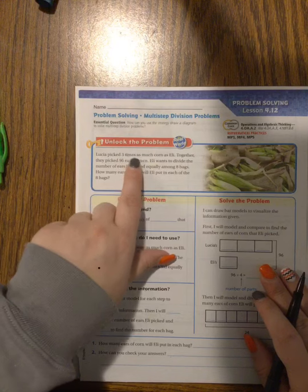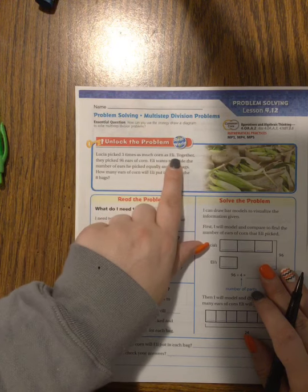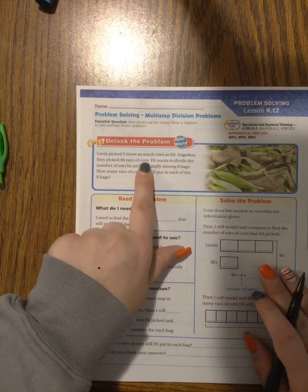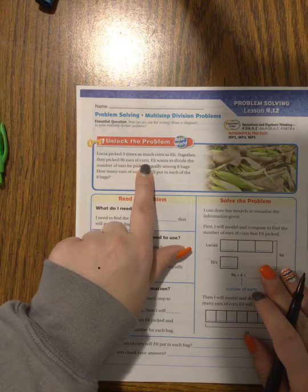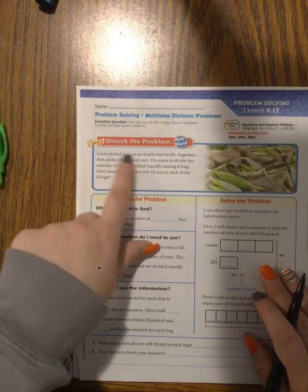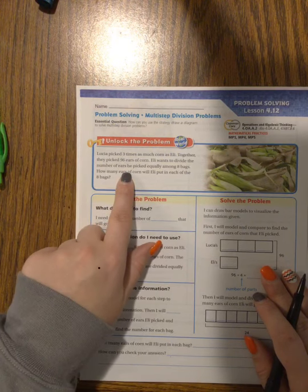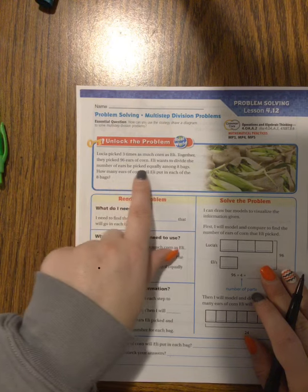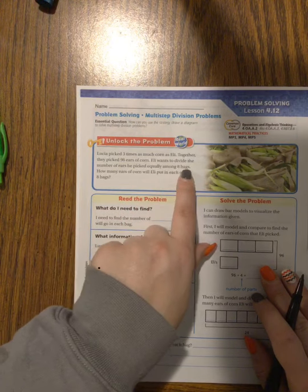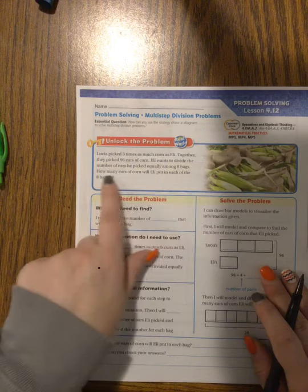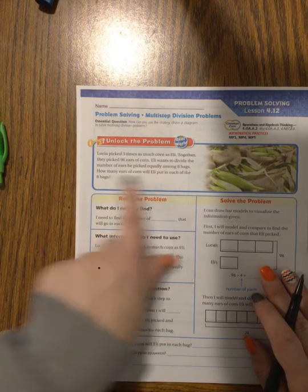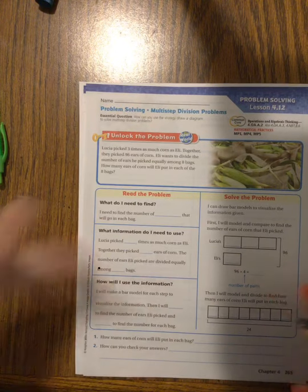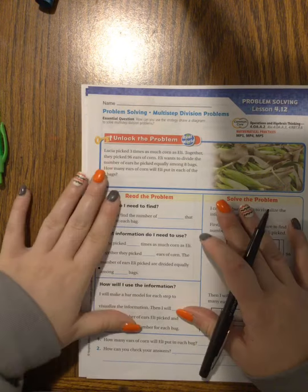Lucia picked three times as much corn as Eli. Together they picked 96 ears of corn. Now that should sound very familiar to you because that's something we learned in our last chapter with multiplicative comparison. Eli wants to divide the number of ears he picked equally among eight bags. How many ears of corn will Eli put in each of the eight bags? So I need to figure out how to use this information.